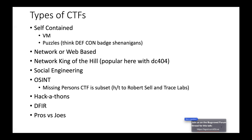They may just put you in front of something like Splunk and say 'have at it, detect what's going on.' From that same vein, Pros vs. Joes typically includes four teams: two sets of pros and two sets of joes — one red pro, one red joe, one blue pro, and one blue joe — and the two teams compete against each other.